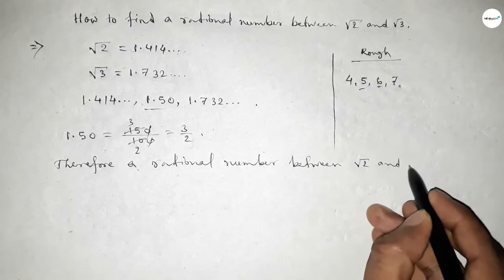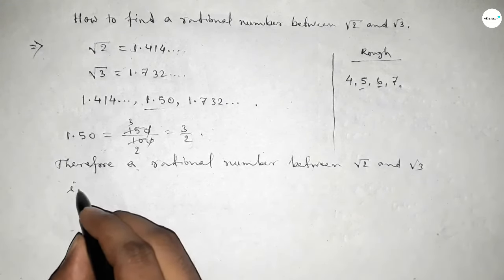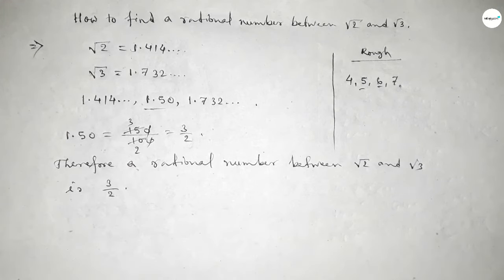This is the process to find a rational number between √2 and √3. That's all, thanks for watching. If this video is helpful, please share it with your friends. Thanks for watching.